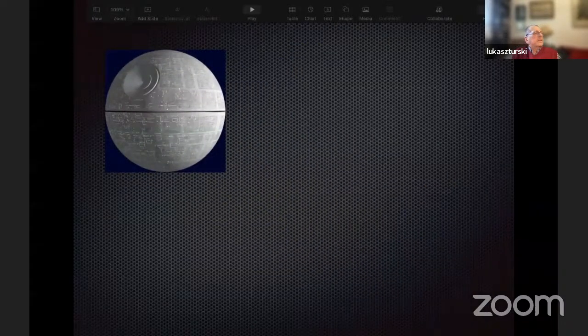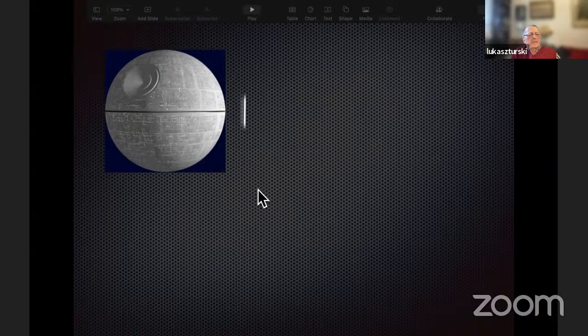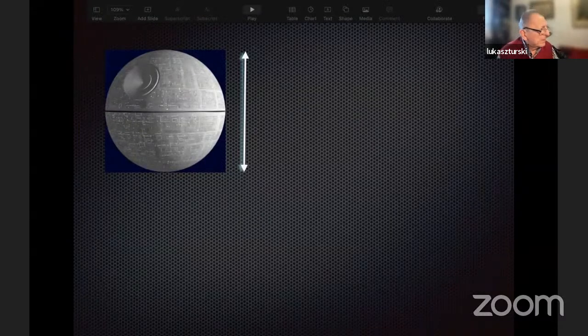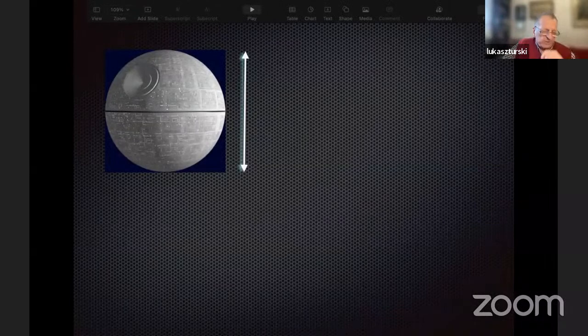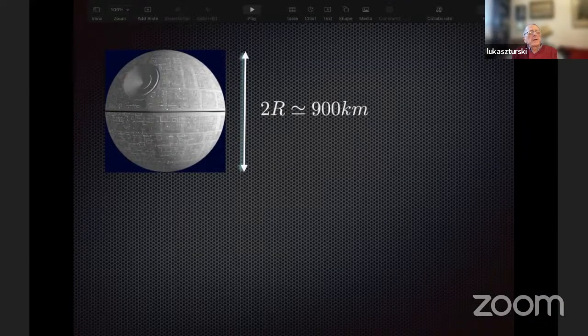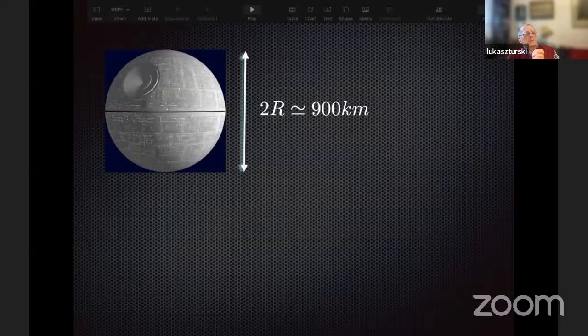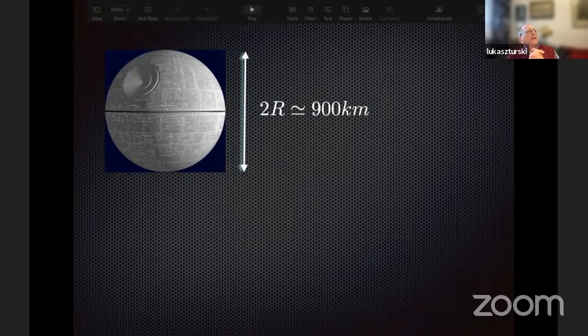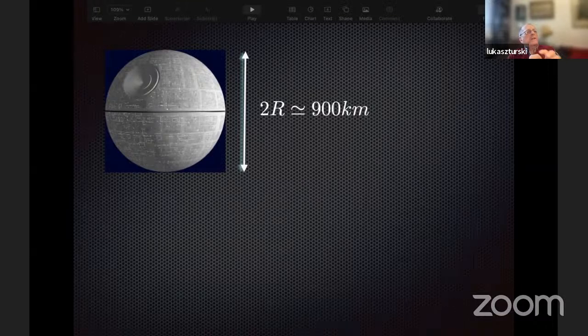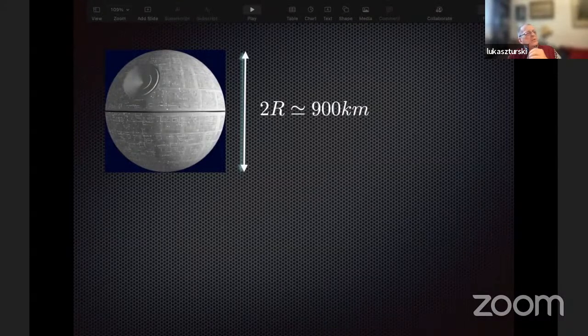Let's now talk about the Death Star. In the film and in the books published on the base of that film, we learn that the diameter of the Death Star is of the order of 900 kilometers. If I have that, then I can do the following calculation.